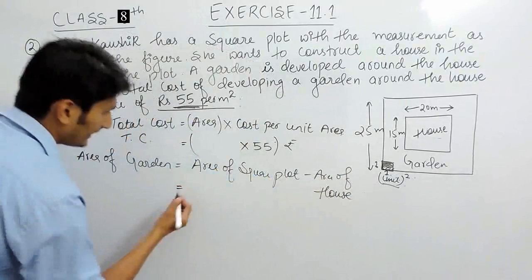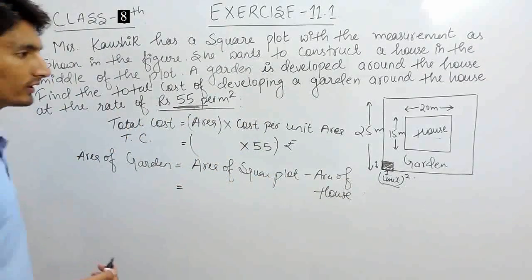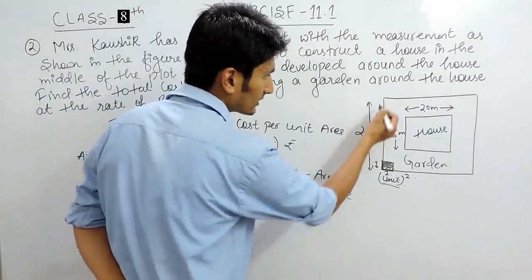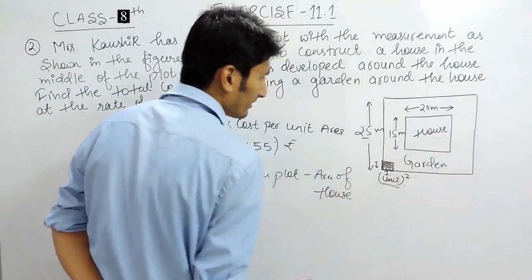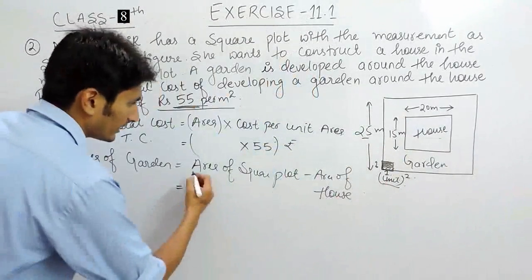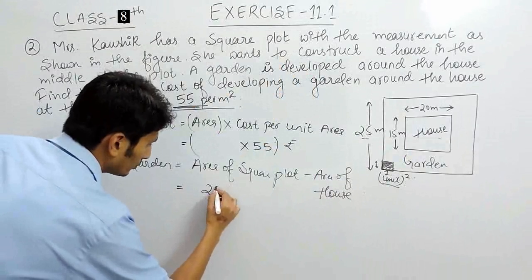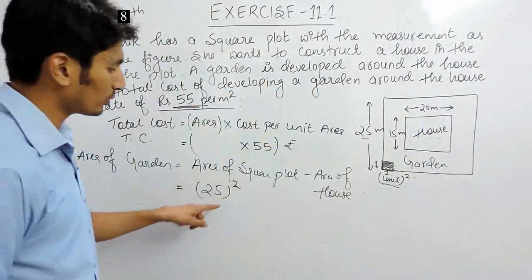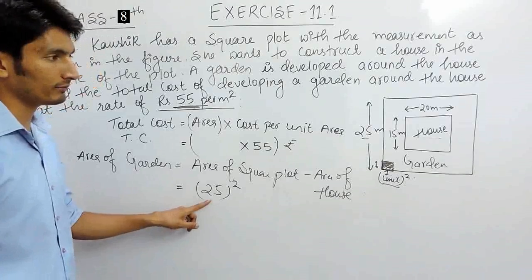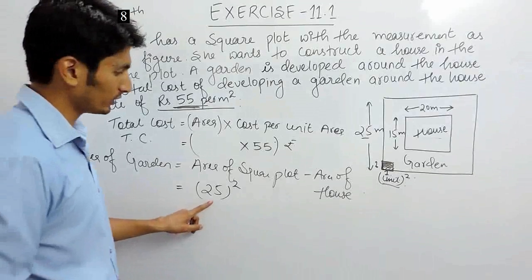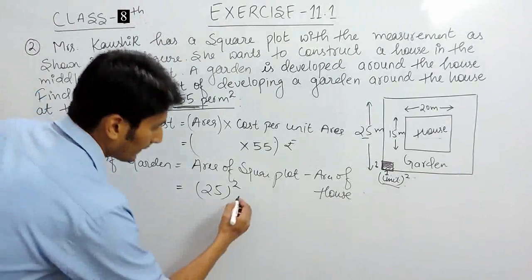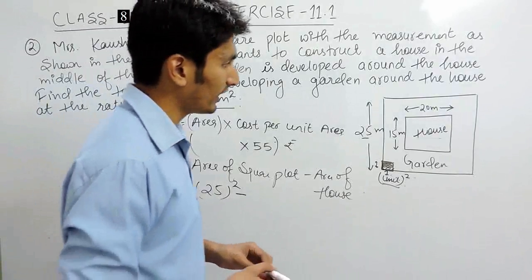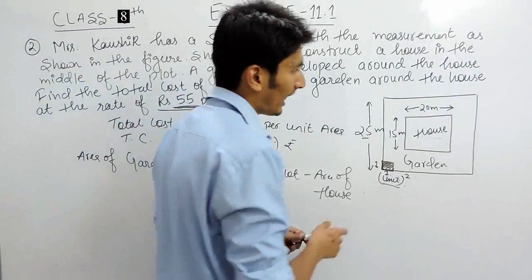The area of the square plot is side squared. The side of this plot is 25 meters, so the area of the square plot is 25² = 625 square meters.